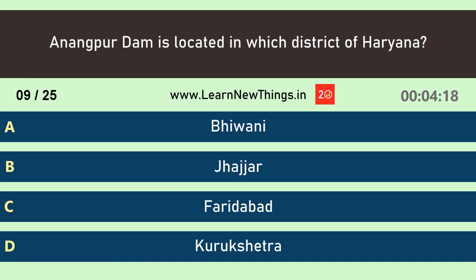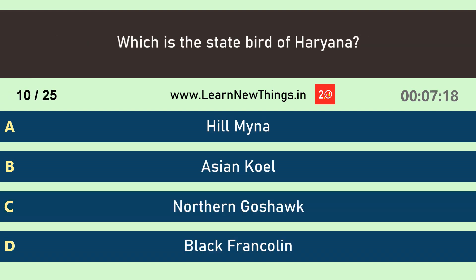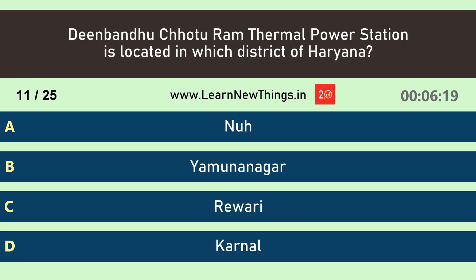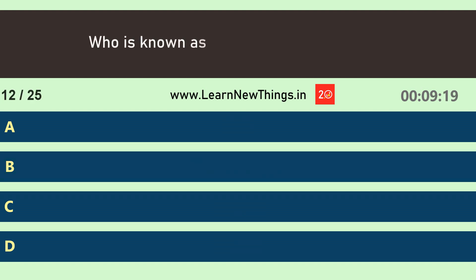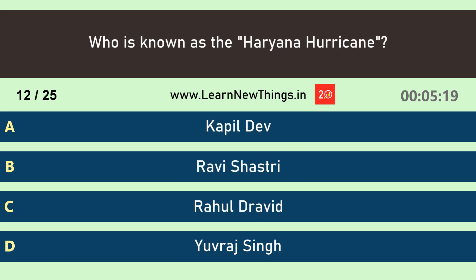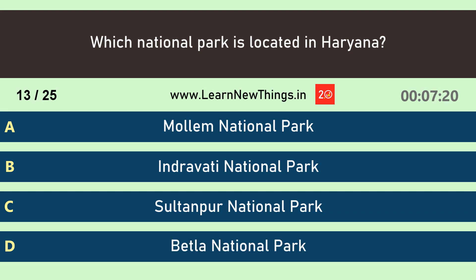Anumpur Dam is located in which district of Haryana? Answer 5: Faridabad. Which is the state bird of Haryana? Answer 6: Black Francolin. Deenbandu Chottu Ram Thermal Power Station is located in which district of Haryana? Answer 6: Yamunanagar. Who is known as the Haryana Hurricane? Answer 7: Kapil Dev. Which national park is located in Haryana? Answer 7: Sultanpur National Park.